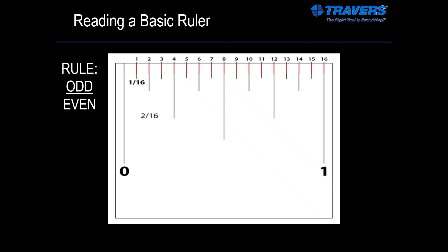But if we take the second line, now we have two over sixteen or two sixteenths. The two is even, so now we have to break it down. We need to divide by two. So we're going to take the two, divide it by two, and we'll get one. Then we take the 16, divide that also by two, and we have an eighth. And that eighth is the actual measurement.